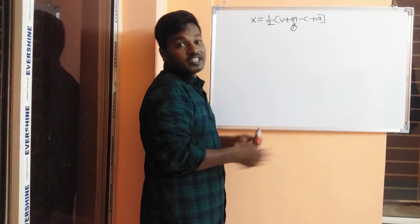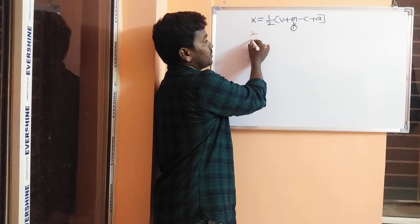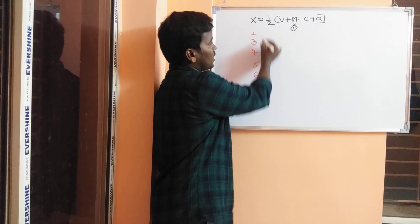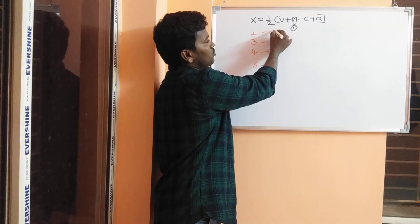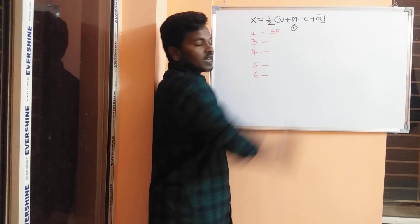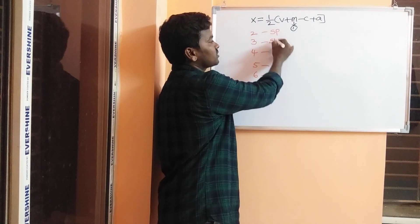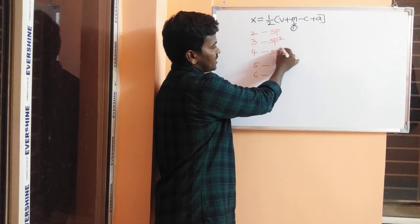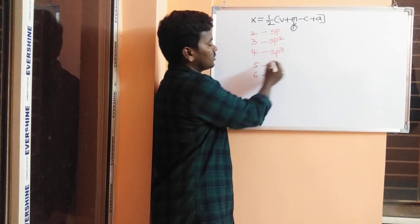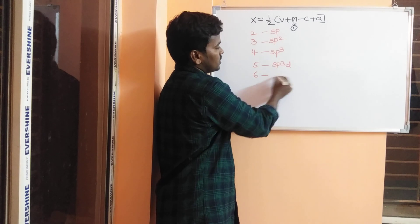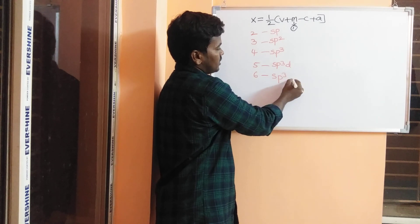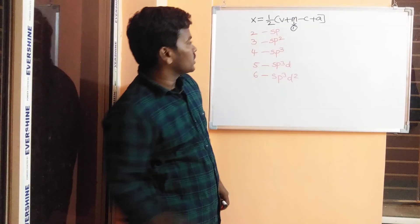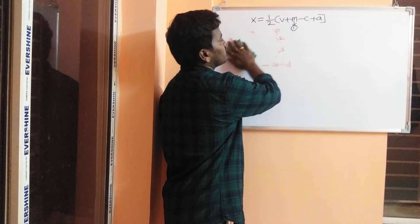By doing this calculation you will get a number — 2, 3, 4, 5, 6, and so on. If you get 2, that is sp hybridization. If you get 3, that is sp² hybridization. If you get 4, that is sp³ hybridization. For 5 it is sp³d, and for 6 it is sp³d², and so on.